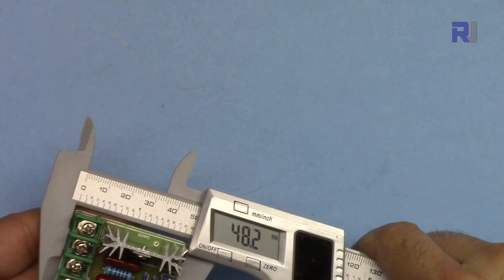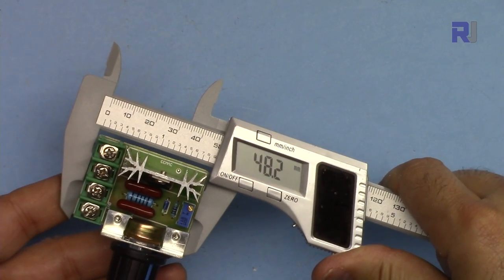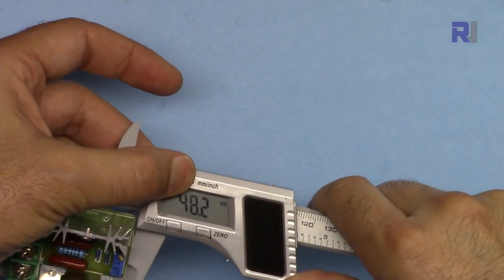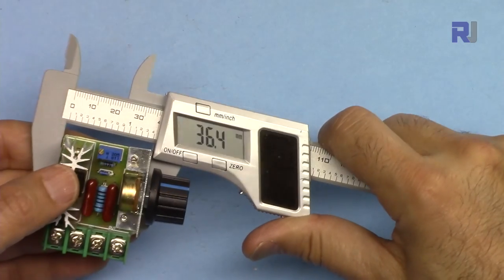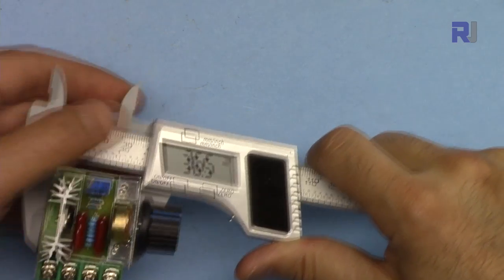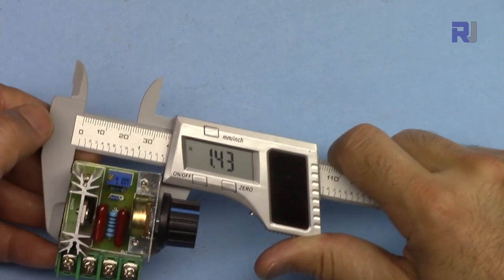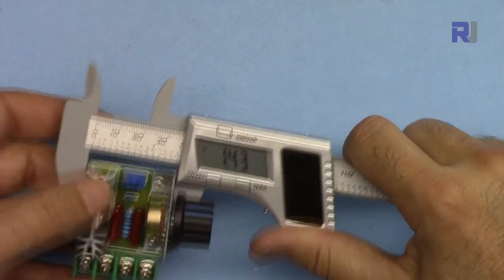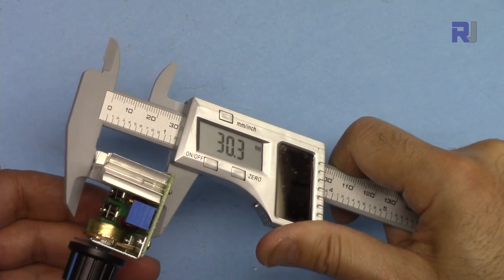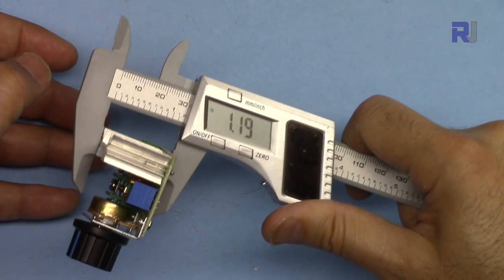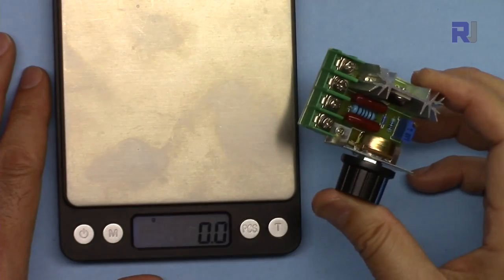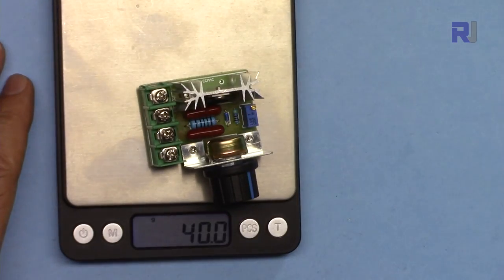Length of this module is 48.2 millimeters or 1.89 inches. The width is 36.4 millimeters or 1.43 inches. The depth is 30.3 millimeters or 1.19 inches. And if you want to know the weight with the knob, it is 40 grams.